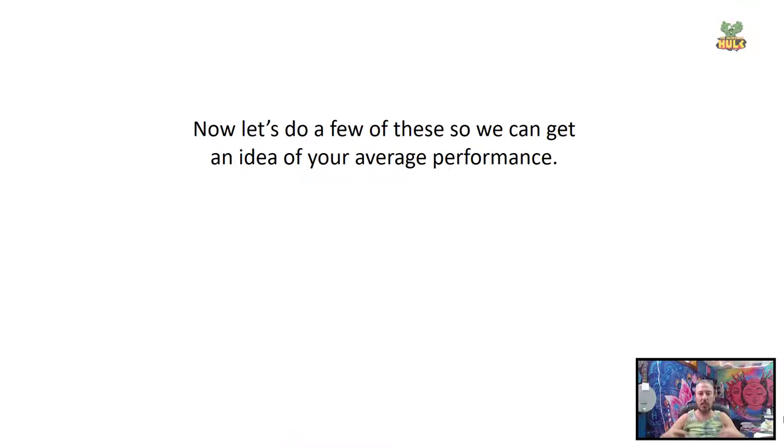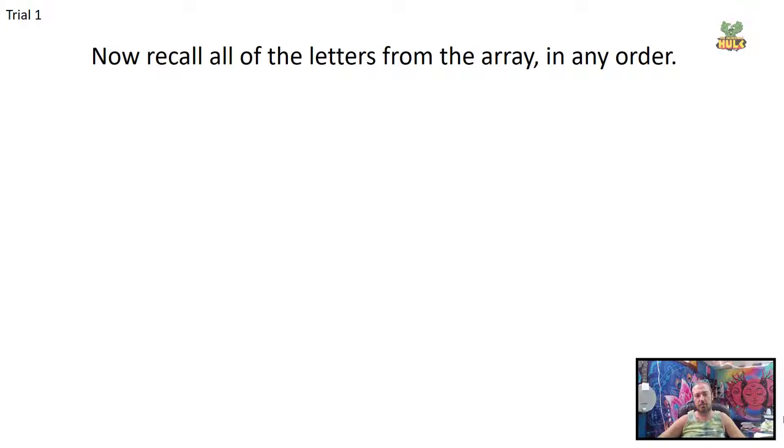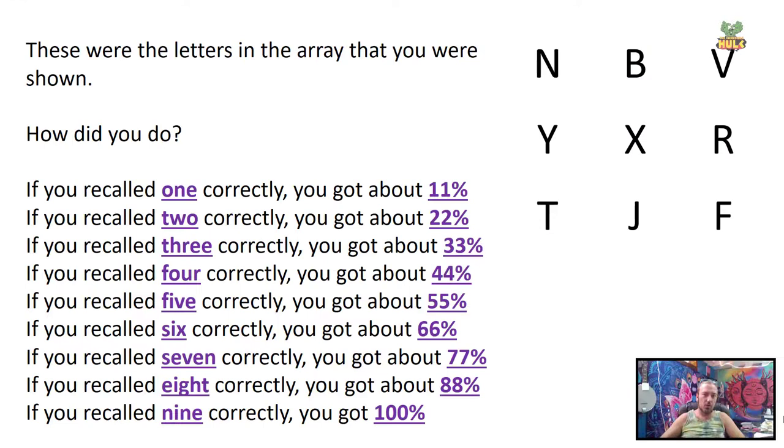Trial one. Write them all down. Remember, pause the video, write them down, then move forward. How'd you do? Score your performance. Did you get one right, two right, three right, four right, five right? Did you get all nine right? Write down the percentage that corresponds to how many you got correct.